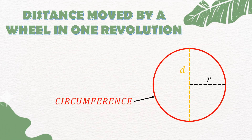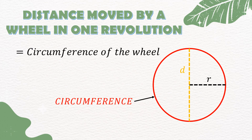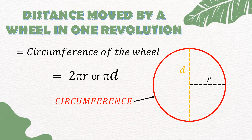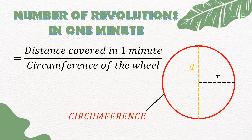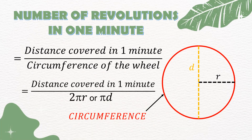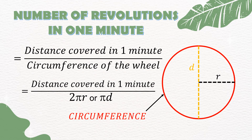Distance moved by a wheel in one revolution is equal to the circumference of the wheel, which is also equal to 2πr or πd. Number of revolutions in one minute is equal to distance covered in one minute divided by the circumference of the wheel, which is also equal to distance covered in one minute divided by 2πr or πd.